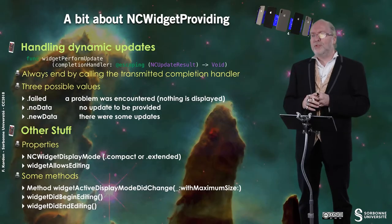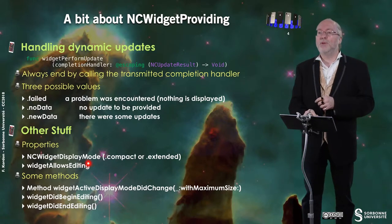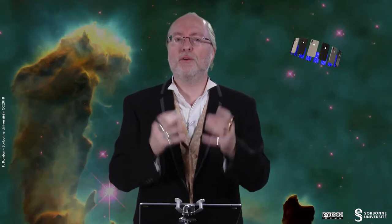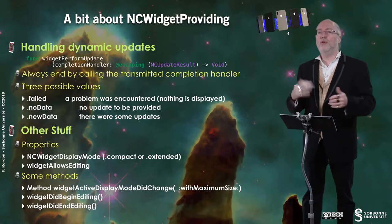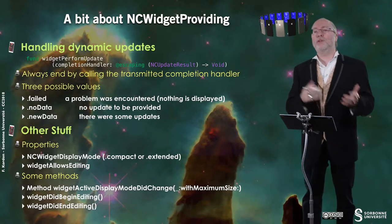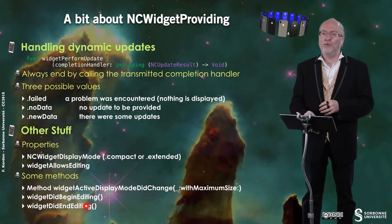You have some other useful stuff — some properties. Here, NCWidgetDisplayMode is either compact or extended, and it provides you the size of the window that displays your Today extension. You also have useful methods that allow you to know when the display mode changes. You can also be invoked when you begin editing or when you end editing. To be honest, you have to go through the manual because I couldn't easily discover when these methods were effectively invoked.